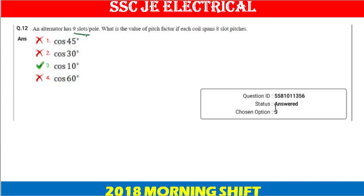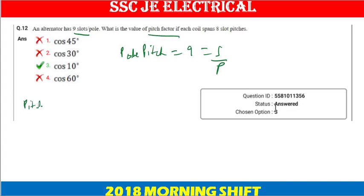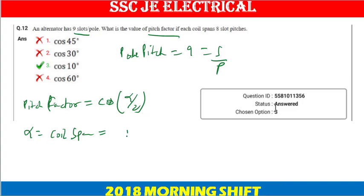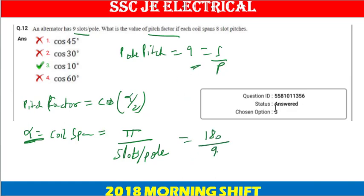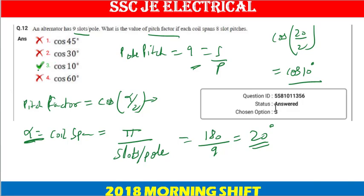Next question: an alternator has 9 slots per pole. Pole pitch equals 9 slots per pole. We need to find the pitch factor. Pitch factor equals cos(alpha by 2), where alpha is the coil span in electrical degrees. Coil span equals 180 divided by slots per pole equals 180 divided by 9 equals 20 degrees. So pitch factor equals cos(20/2) equals cos 10 degrees. Answer: option C.